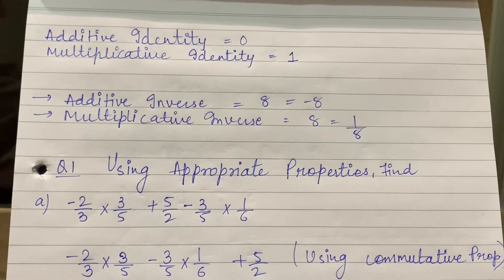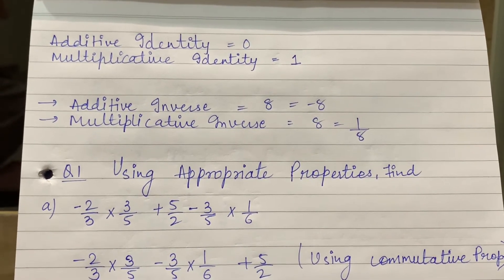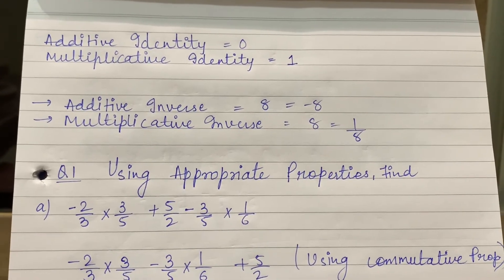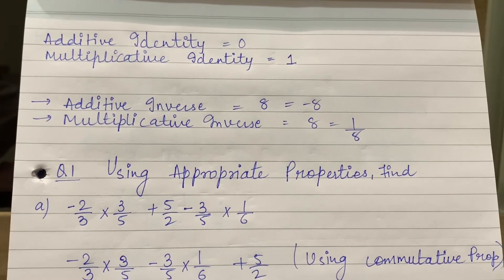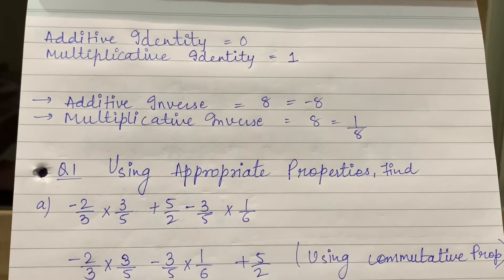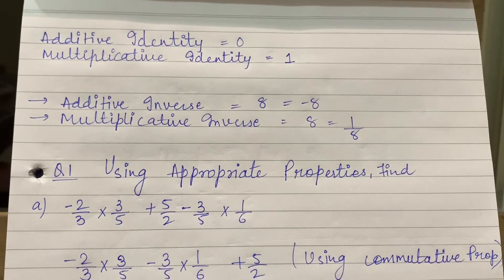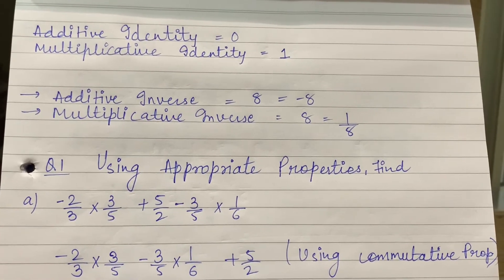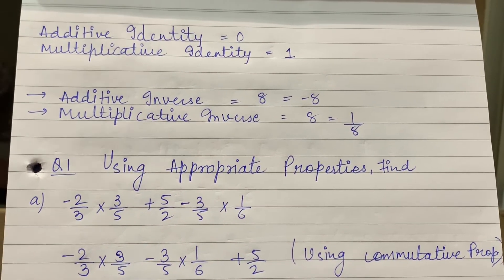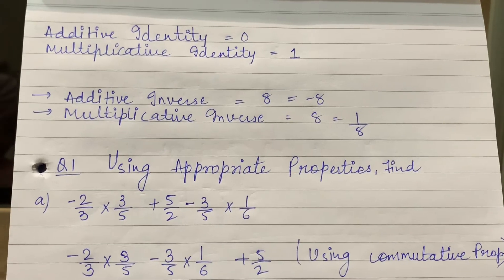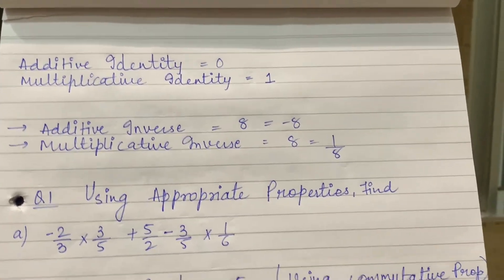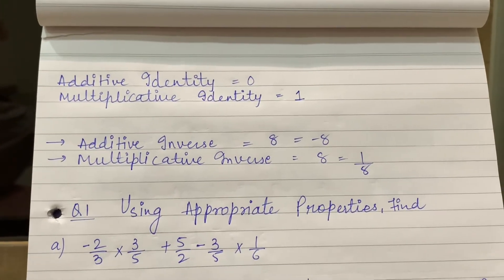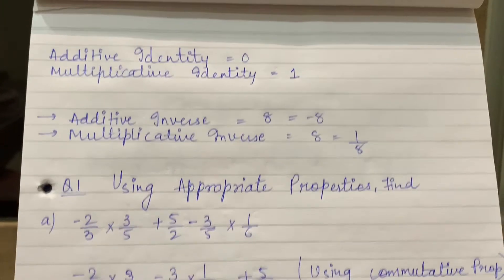Additive inverse example: if I have 8, then its additive inverse will be minus 8. If it is positive 8, then it will be negative 8. Similarly, in multiplicative inverse, if I have 8, then it will become 1 upon 8. In multiplicative inverse, we flip — multiply becomes divide. If it is 3 upon 4, then its multiplicative inverse will be 4 upon 3.